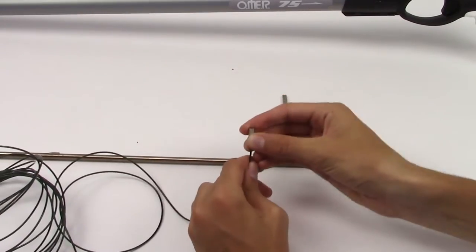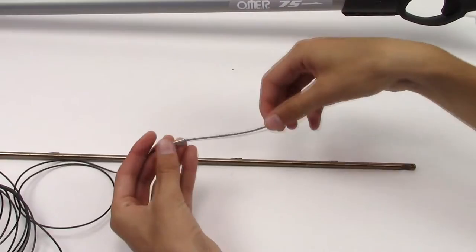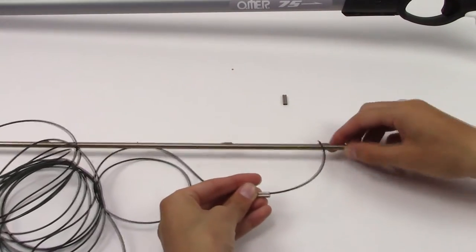Using your crimping tool and the appropriate size sleeve, attach the shooting line to your shaft.